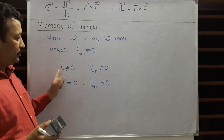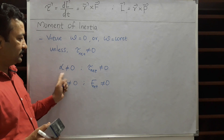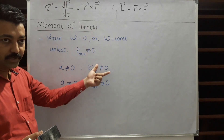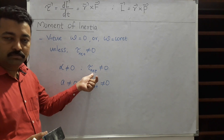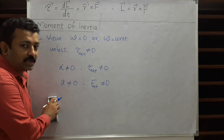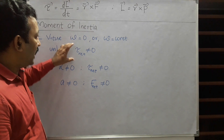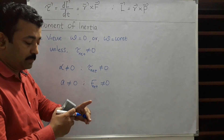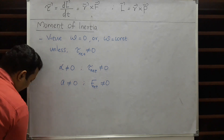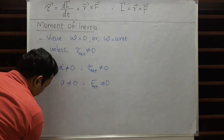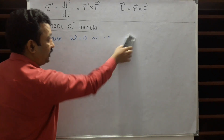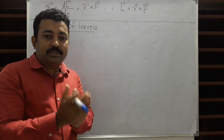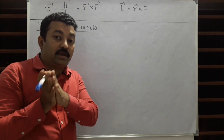Alpha not equal to zero means there is angular acceleration — meaning omega is continuously changing. When will it change? Only when there is a net torque. So moment of inertia is the property by virtue of which a body tends to remain in the state of rest or constant angular velocity unless tau net is not equal to zero. If a body has that property, let us find the expression for moment of inertia for different types of systems.